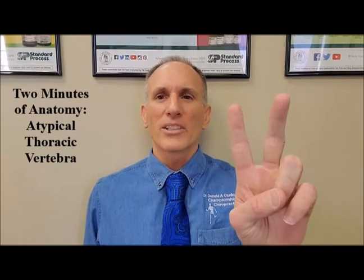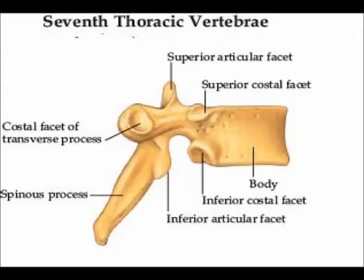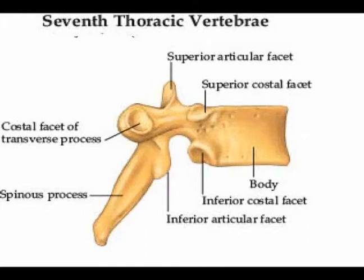Hello and welcome to Two Minutes of Anatomy. I am Dr. Donald Ozzello of Championship Chiropractic in Las Vegas, Nevada. The thoracic spine is the medical name for the mid-back. The thoracic spine contains 12 vertebrae, numbered T1 through T12, starting superior and working inferior.